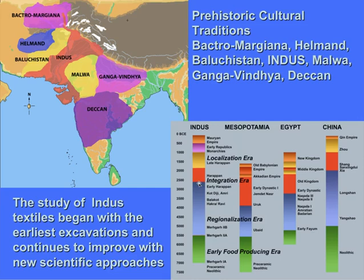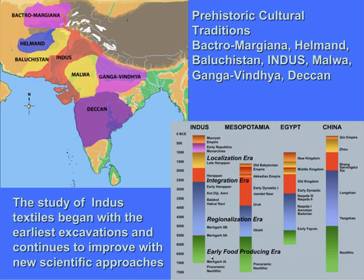The time period for the development of urbanism is around 2600 BC, comparable to Mesopotamia, Egypt, and China. But the early developments of food production — the domestication of plants and animals — goes quite early in the Indus Valley, as early as 7000 BC. By 5500 BC, we begin to see pottery being made and eventually regional cultures developing. I use a framework of early food producing era, regionalization era, and integration as a period of urbanism as the main three periods I'll be discussing.